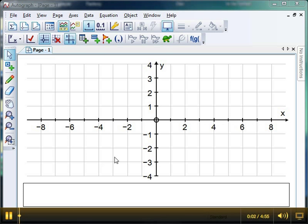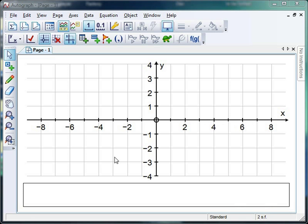Hello and welcome to Mr Barton's Autograph video number 25. This week we're going to take a look at one of the most common things people tend to do with Autograph and that's to use it to investigate straight lines and the equation of straight line graphs. We're going to have a look at two different approaches to this and discuss the merits of both.